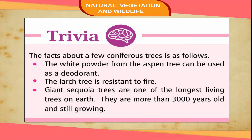Trivia. A few facts about coniferous trees: the white powder from the aspen tree can be used as a deodorant, and the large tree is resistant to fire. Giant sequoia trees are one of the longest living trees on Earth — they are more than 3000 years old and still growing.